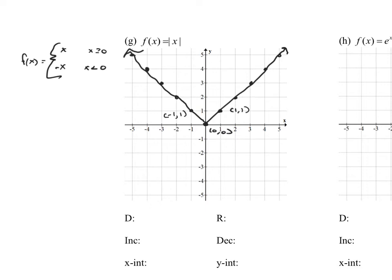The absolute value of x is that V function. What's the domain? Domain is how far left and how far right this graph goes — all the way to negative infinity on the left, all the way to positive infinity on the right. So the domain is negative infinity to infinity. Range is how far down and how far up. It stops at y equals 0 going down, and goes all the way to infinity going up. So the range is bracket 0, comma, infinity.